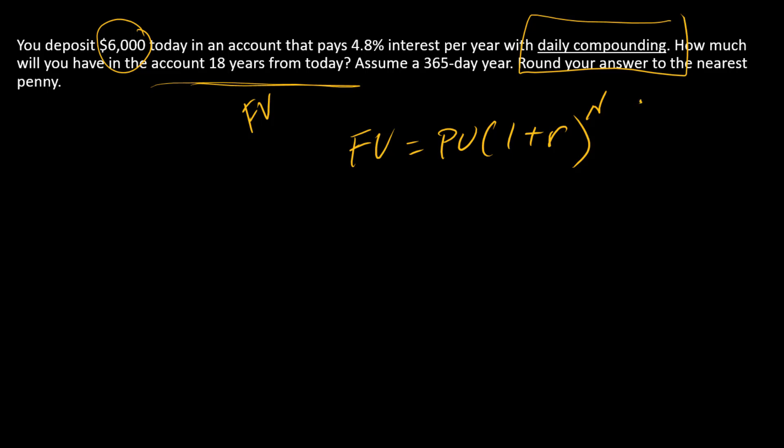The catch is our N needs to be a number of periods and the R needs to be a periodic rate. So what's the period? Well, the period is one day.